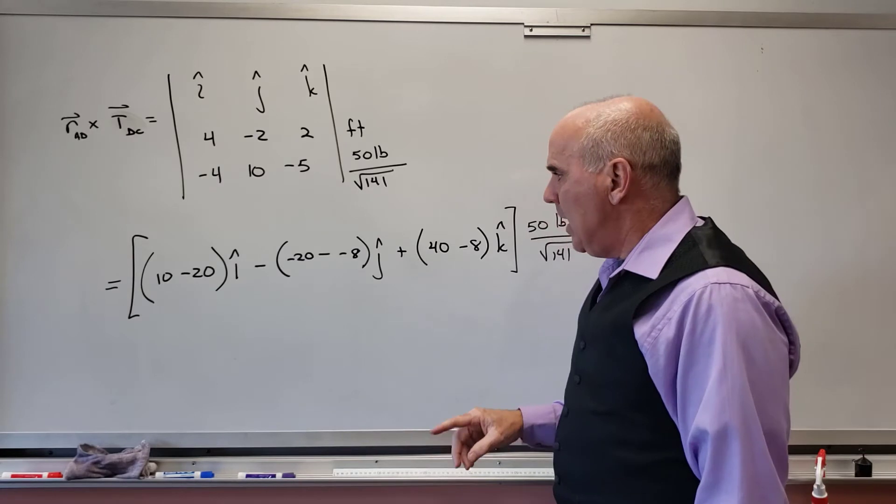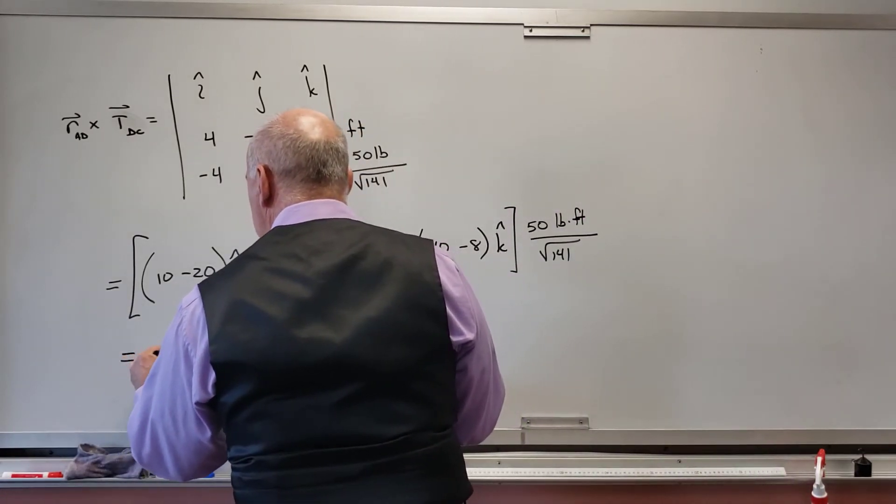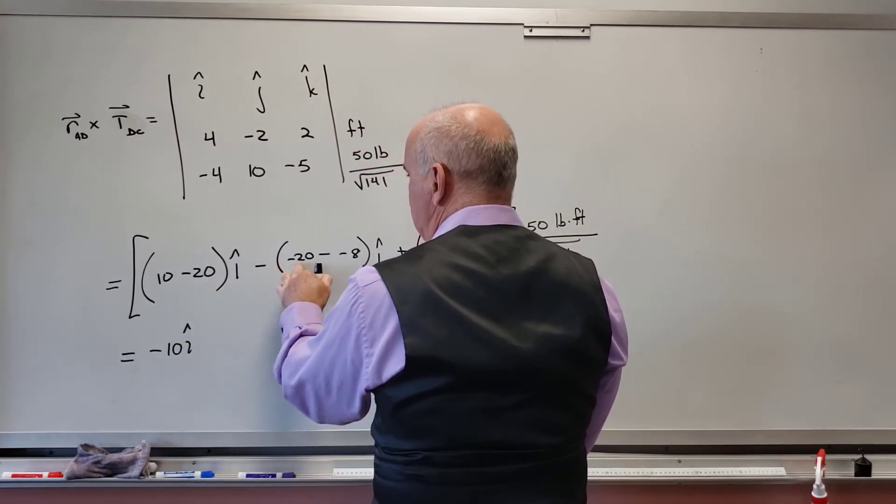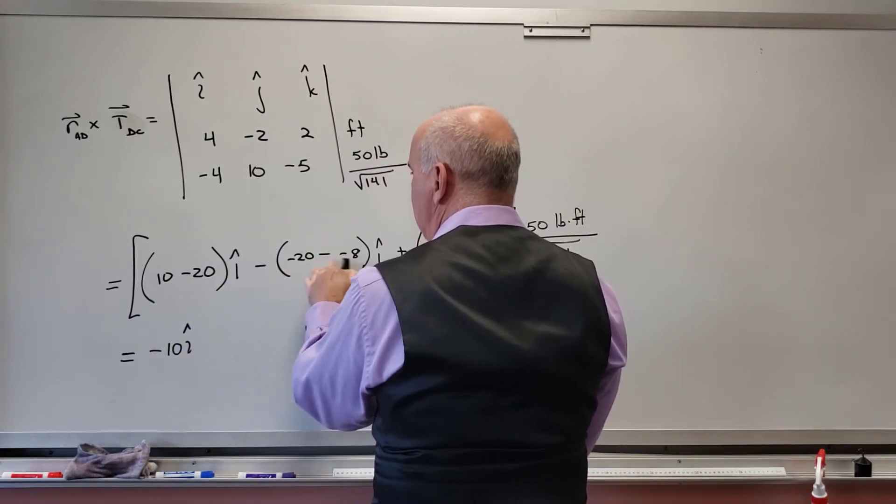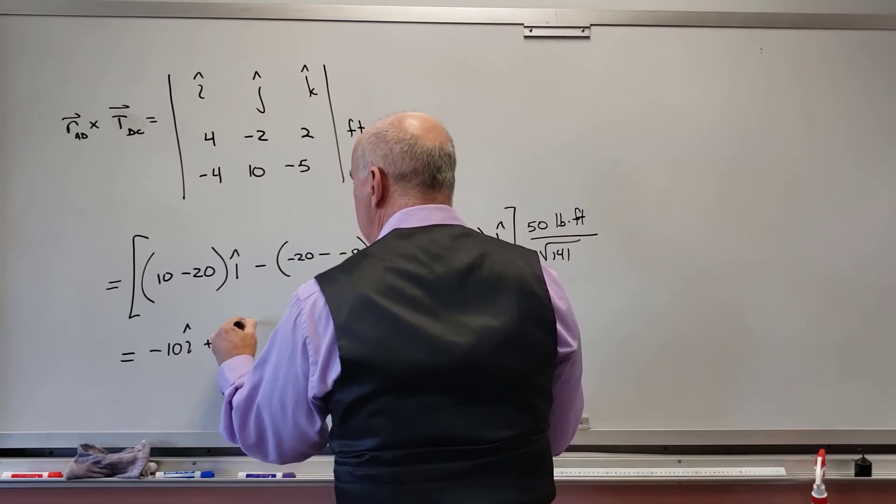And so what do I get? I get -10i minus, this becomes -20 plus 8, that's -12, but then minus and minus becomes plus 12j.